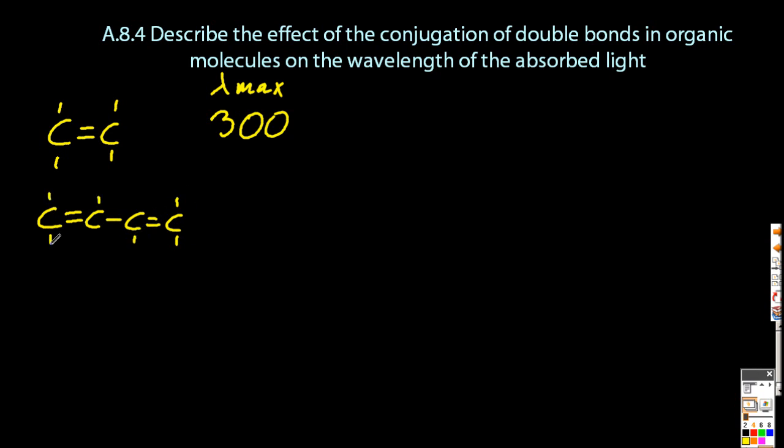The next molecule has two double bonds in it, two conjugated double bonds, and so that's now going to absorb a little bit higher. Let's say 330 nanometers, still in the UV, and so this also appears colorless.